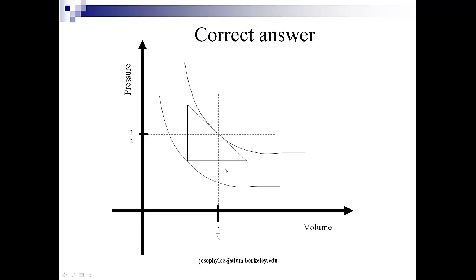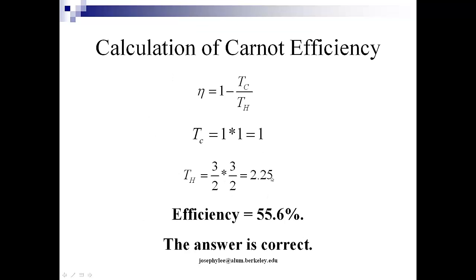So, 1.5 will be the midpoint of this triangle along the volume and 1.5 will be the pressure value midpoint on this triangle right here. So, TH will be right here: 1.5 times 1.5 which is 2.25 and TC will be 1. And the real correct efficiency is 55.56% and this is the correct answer.